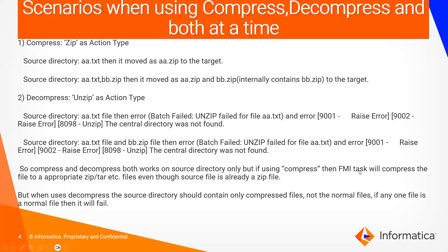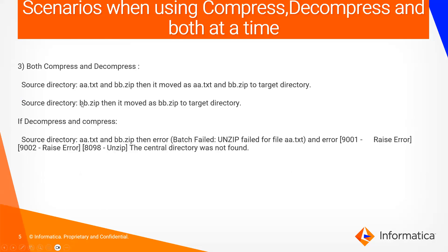When using compress, the FMI task will compress the file even if there is already a zip file present. But when using decompress, the source directory should contain only compressed files — any non-compressed files will cause the FMI job to fail directly. If you use both compress and decompress — first compress with ZIP, then decompress with unzip — then a.txt is first compressed to a.zip, then decompressed back to a.txt, which moves to the target. And bb.zip gets zipped again as bb.zip, then decompressed, so bb.zip moves to the target.